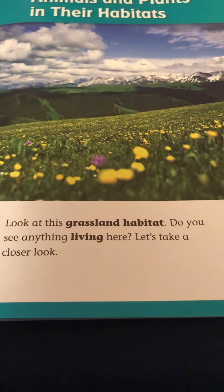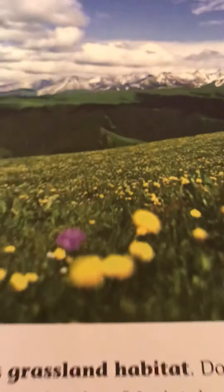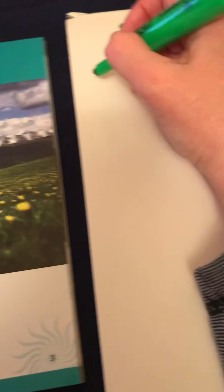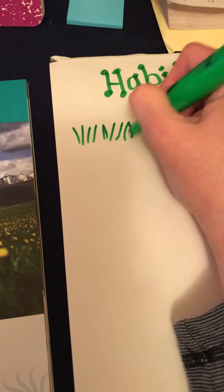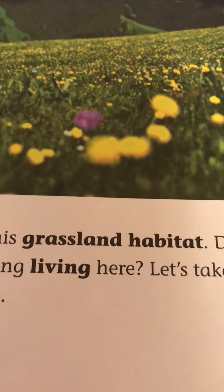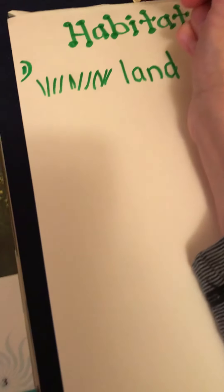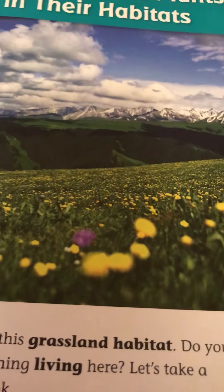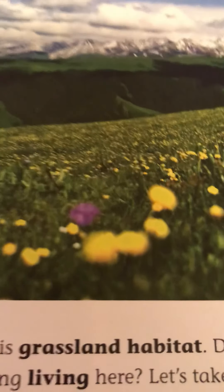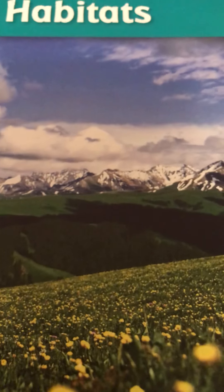Look at this grassland habitat — do you see anything living here? Let's take a closer look. Do you see anything living in the grassland habitat? I'm going to write 'grass' over here because I can draw grass, and then I'll write 'grassland.' This is going to be our first habitat. What do you see living in that grassland? I see flowers — yellow and purple — and grass. Do you see the mountains in the background? Beautiful. Oh, do I see a bird in that cloud? I think I do.